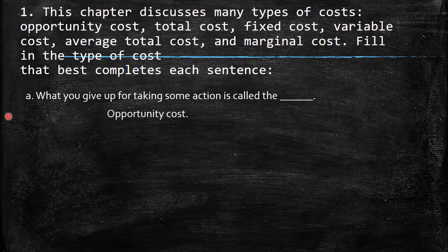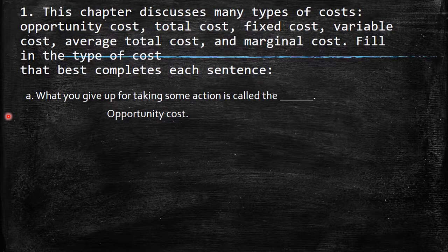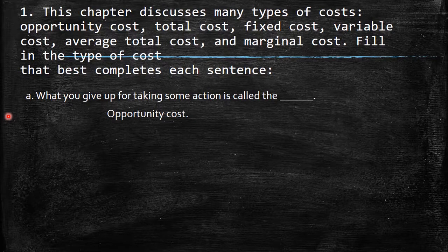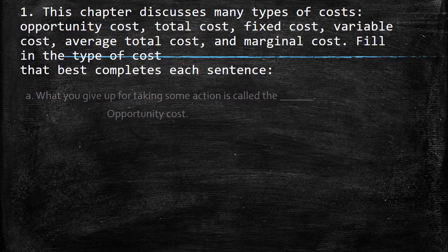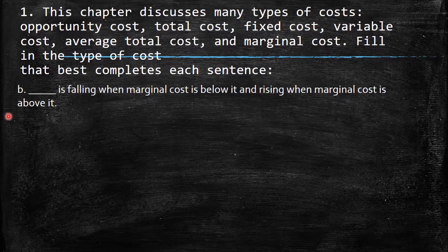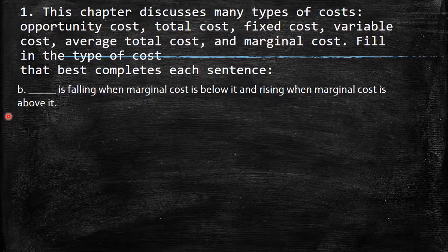The first sentence asks: what you give up for taking some action is called the — basically, in economics, opportunity cost means something that you forgo in order to have something else. For example, the time I'm recording this video I could be watching TV, so that's my opportunity cost.